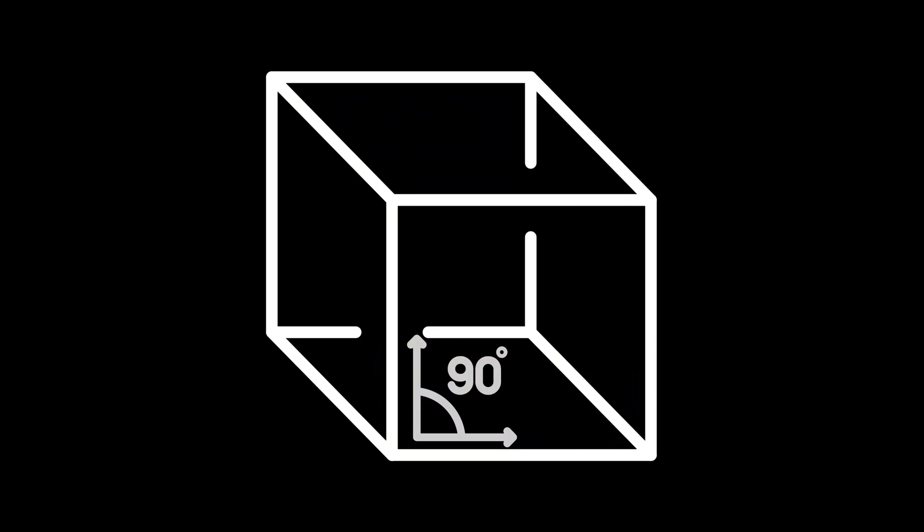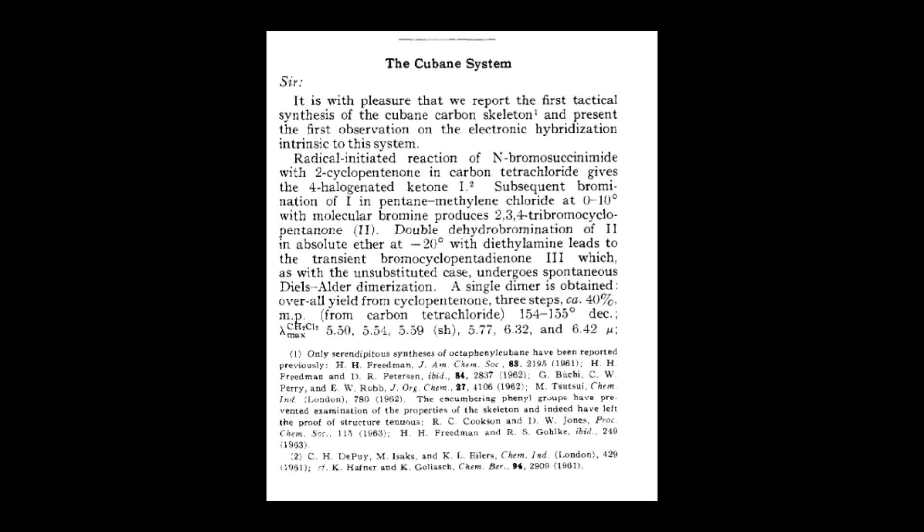Philip Eaton was the first to suggest that a molecule with the structure of cubane could exist, even though many doubted him due to its extremely strained bond angles. He proved the haters wrong in 1964, when he and Tom Cole at the University of Chicago performed the first synthesis of a cubane system.